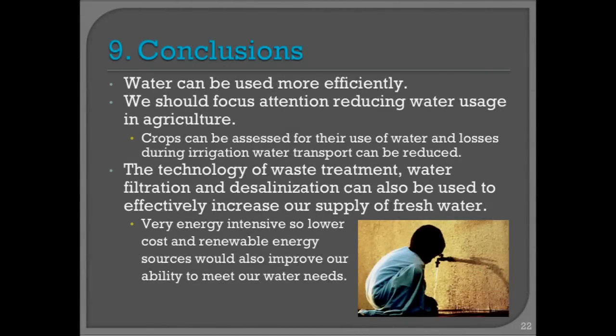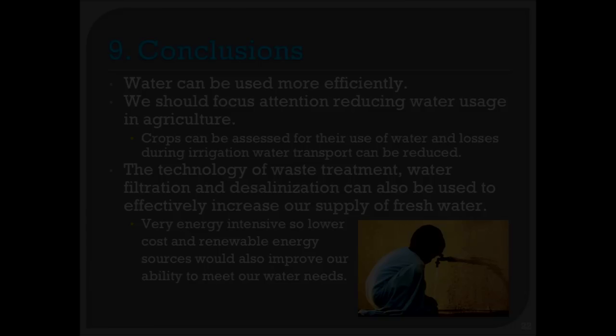Let me conclude. First, water can be used more efficiently. We should focus attention on reducing the use of water in agriculture. The technology of waste treatment, water filtration, and desalinization can be used to increase our supply of water, but the issue of cost is not going away. We're going to have to figure out ways of improving both the technology, the use of capital, and the distribution of water. It's a major public policy problem and it needs to be addressed. Thank you.